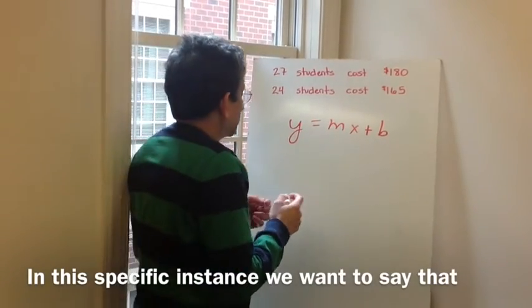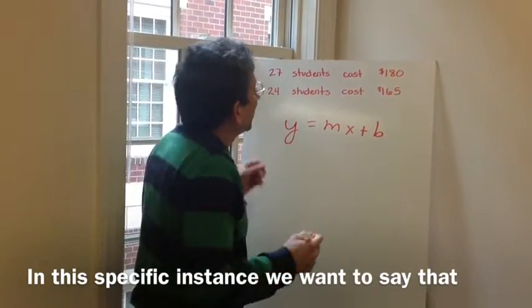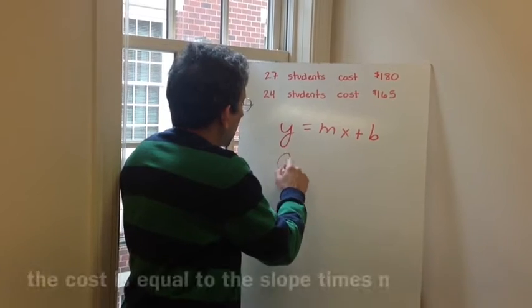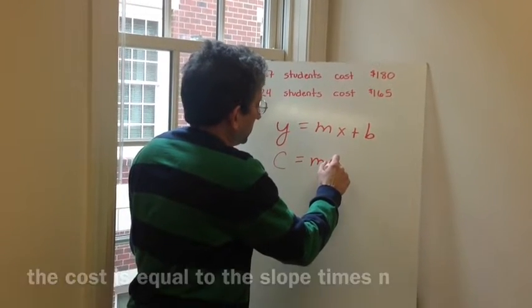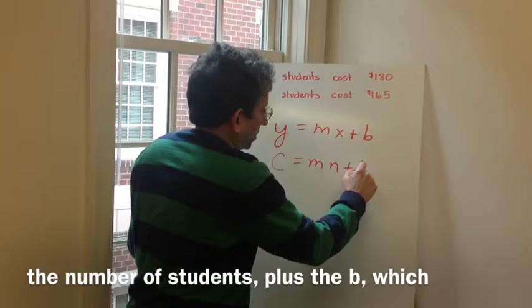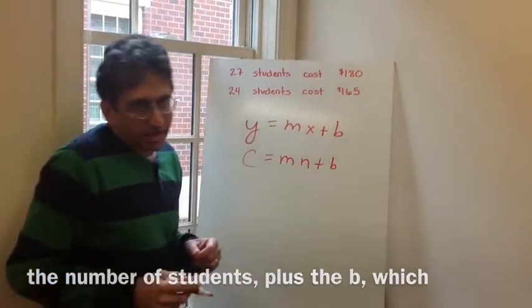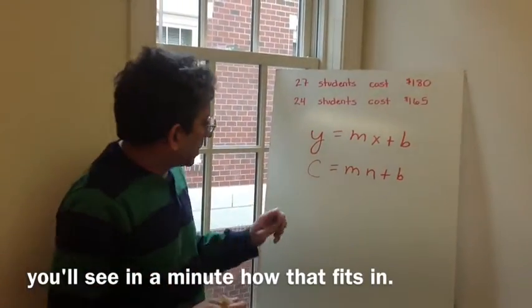In this specific instance, we want to say that the cost is equal to the slope times n, the number of students, plus the b, which you'll see in a minute how that fits in.